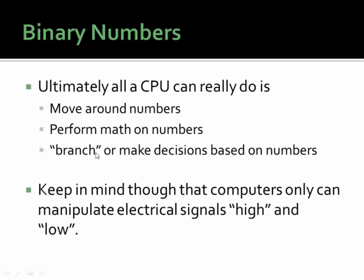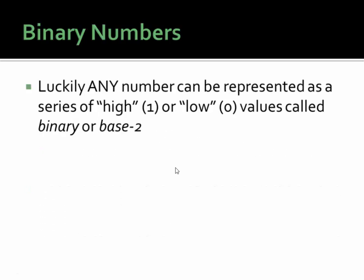Keep in mind, computers can only manipulate electrical signals in two states: high or low. At least, digital computers — other kinds of computers like quantum computers are well beyond the scope of this discussion. Luckily, any number can be represented as a series of high (one) or low (zero) values, called binary or base two.